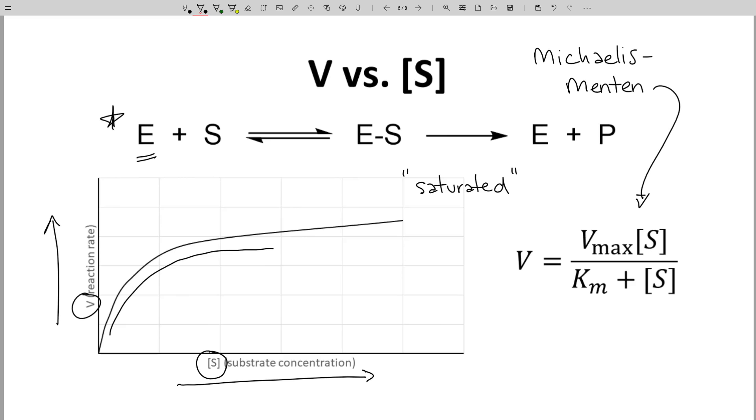We have two new terms. Vmax is the maximum y-value for the equation, the top of the plateau, which we have not really reached in this graph. The other term is the Michaelis constant, Km, and we'll need to spend some time discussing that constant.